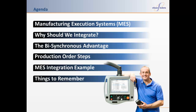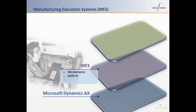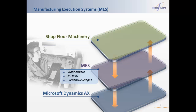I'll drill down to the actual points of integration within AX operational steps, and I've also included a brief video to show a true bisynchronous integration within AX. It's important to understand there's always a layer of technology between your shop floor machines and any ERP system. This layer is commonly referred to as a Manufacturing Execution System or MES. Commercial systems such as Wonderware and Merlin are common in the enterprise space, and Ellipse Solutions has provided links to both of these systems using the same principles discussed in this presentation.